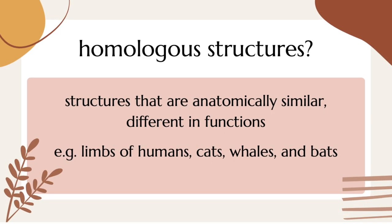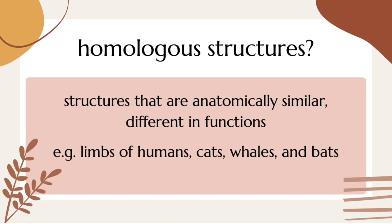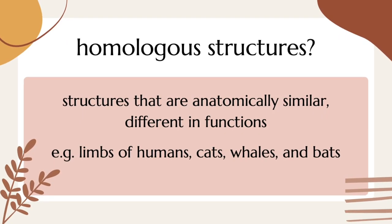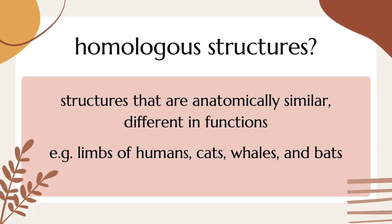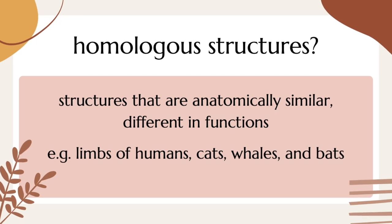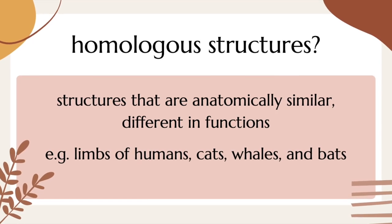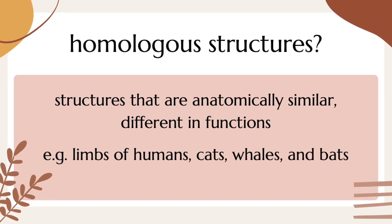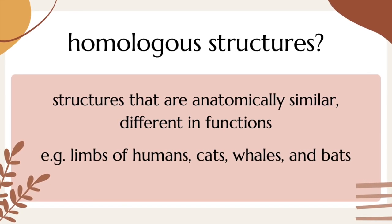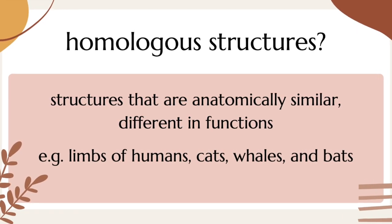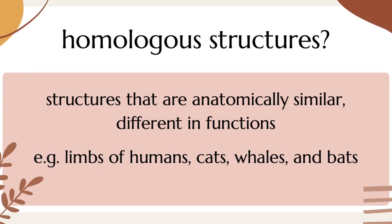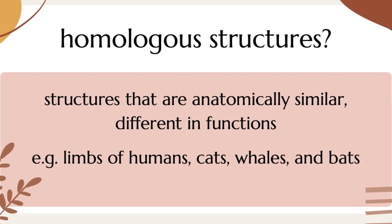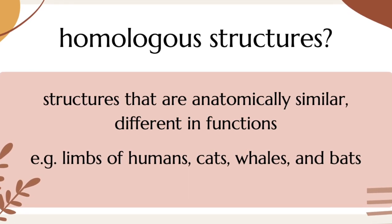What are homologous structures? Homologous structures are structures that are anatomically similar but are different in functions. An example of homologous structures are the limbs of humans, cats, whales, and bats.